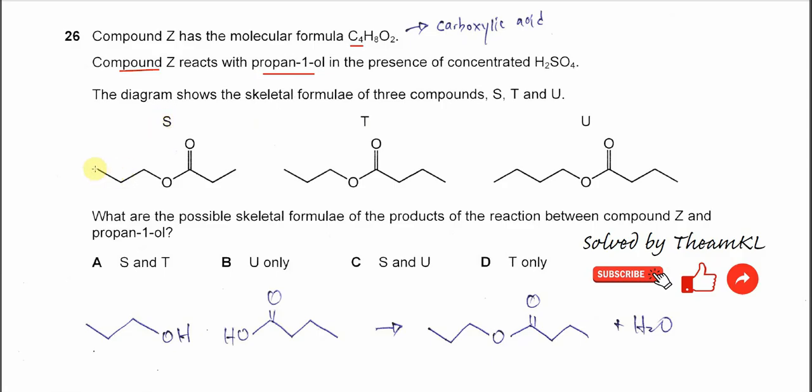For S, the carbons are 1, 2, 3, 4, 5, 6 - so not the answer. For T, the carbon number is 1, 2, 3, 4, 5, 6, 7, so this one can be the answer. And U is 1, 2, 3, 4, 5, 6, 7, 8 - eight carbons. So S and U cannot be the products.